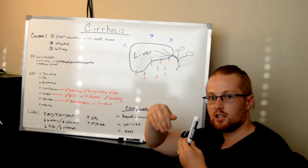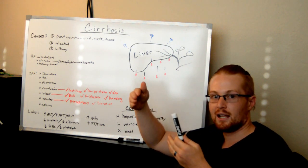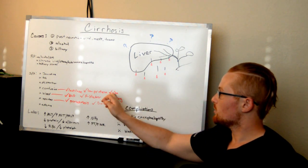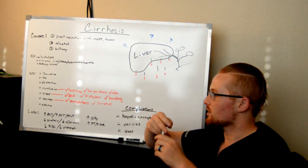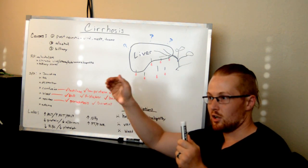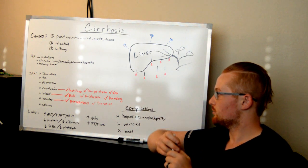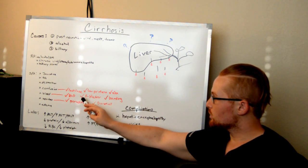Instead of that, you can give them antibiotics. This is a particular antibiotic that kills the bacteria in your intestines that produce the ammonia. You can also give them a low protein diet because ammonia is a breakdown of protein.